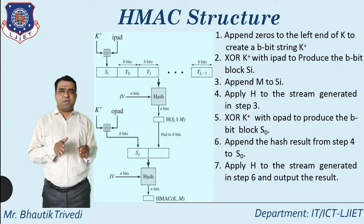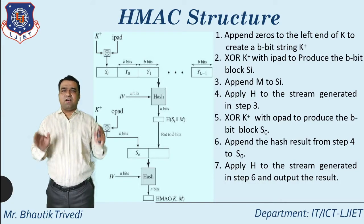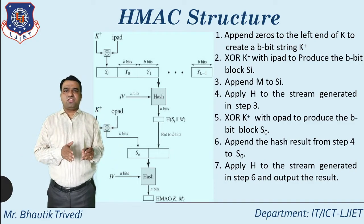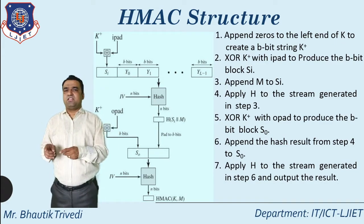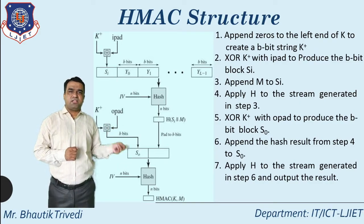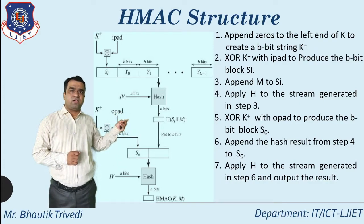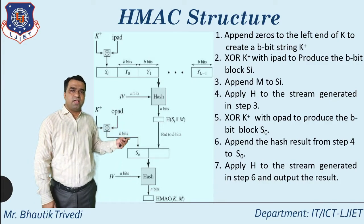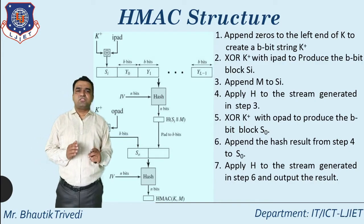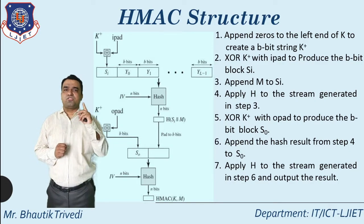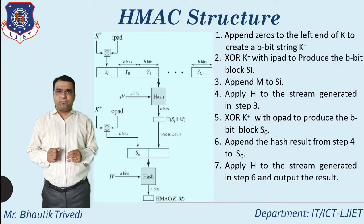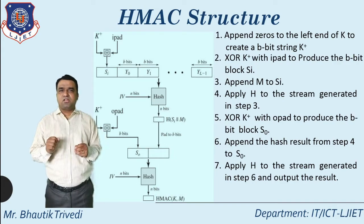To summarize the steps: step one — use key K with padding to generate K+; step two — XOR K+ with ipad to generate Si; step three — append message M to Si and apply the hash function to get the hash result; step four — XOR K+ with opad to get So; step five — concatenate the hash result to So and apply the hash function with IV to generate the final HMAC.